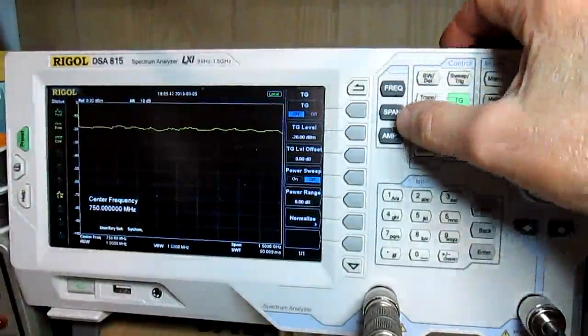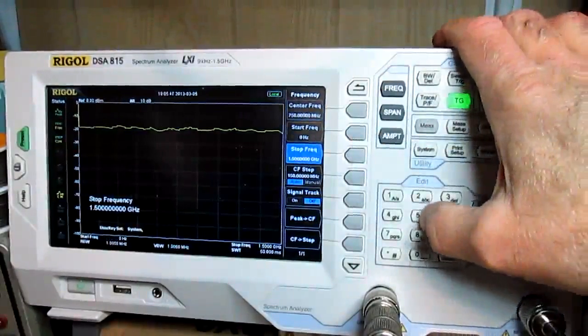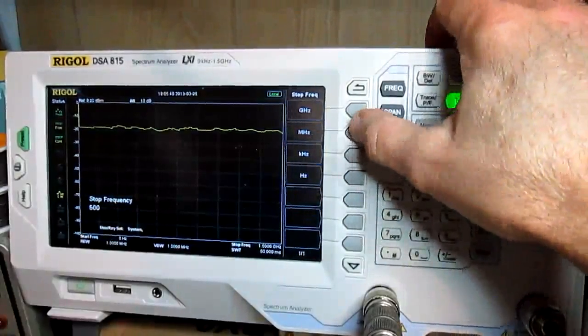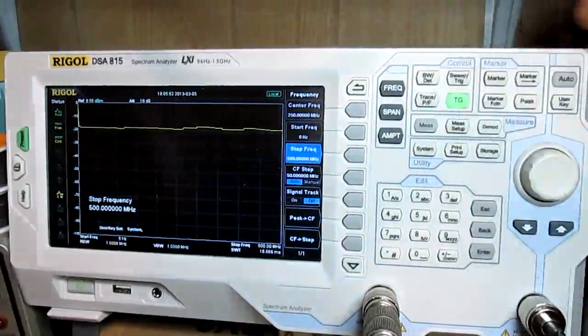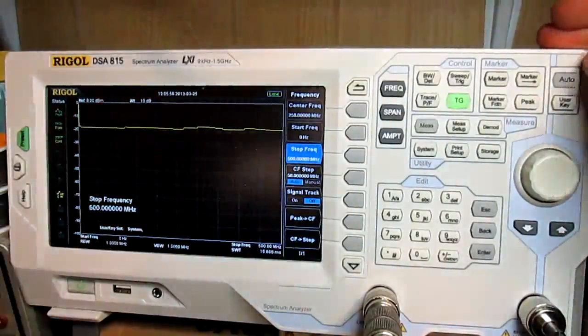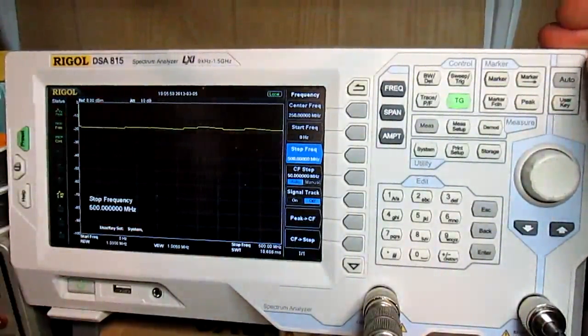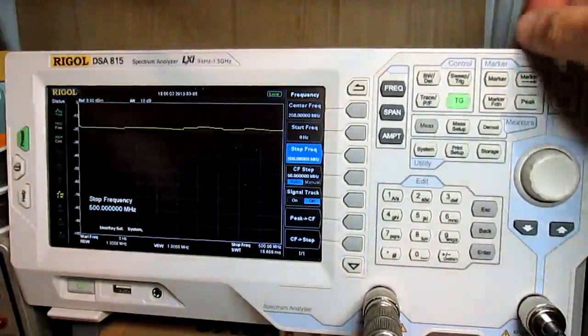So, let's change the frequency. Start can still be zero, I don't care. Stop 500 MHz. And, by the way, if you can't read it, I'm using a Rigol, I don't know which way they say it, I think it's Rigol. I'm using the DSA 815 Spectrum Analyzer with the Tracking Generator option.